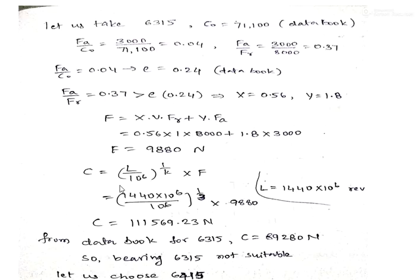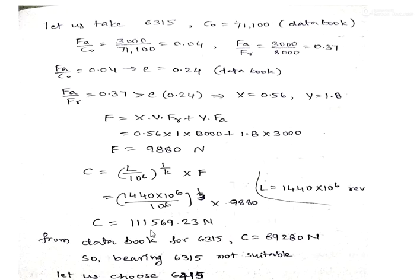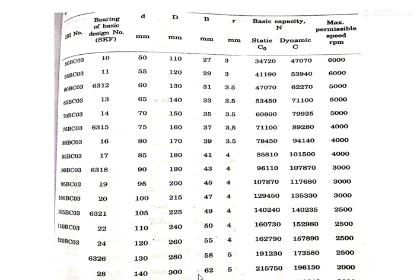Substituting into the C formula, we get the required dynamic capacity C = 1,11,569.23 N. However, the data book shows that for the 6315 series, the dynamic capacity is only 89,280 N, which is less than our required value of 1,11,569 N. So this bearing is also not suitable. Let us go for the next series, 6415.